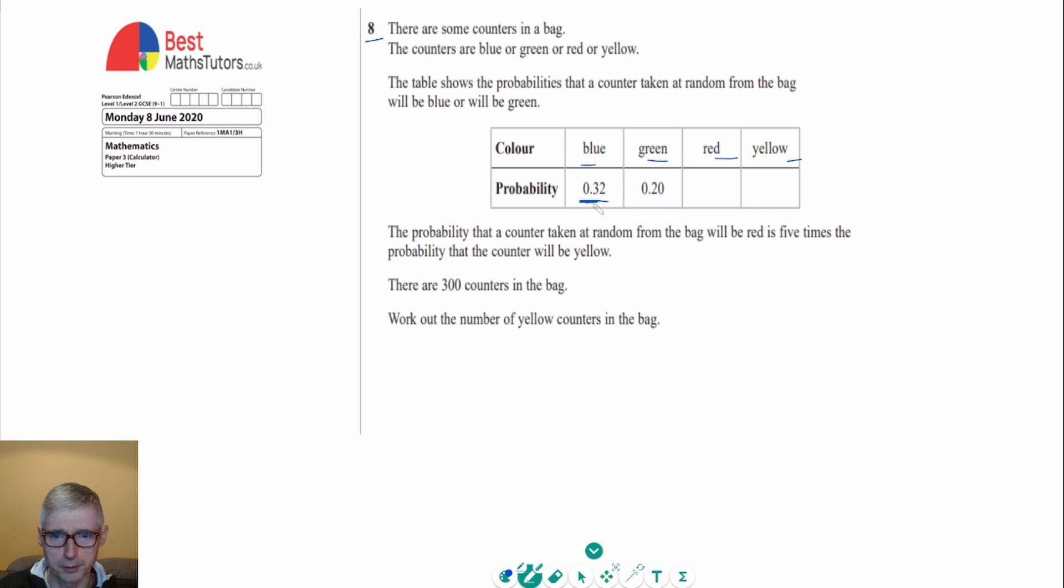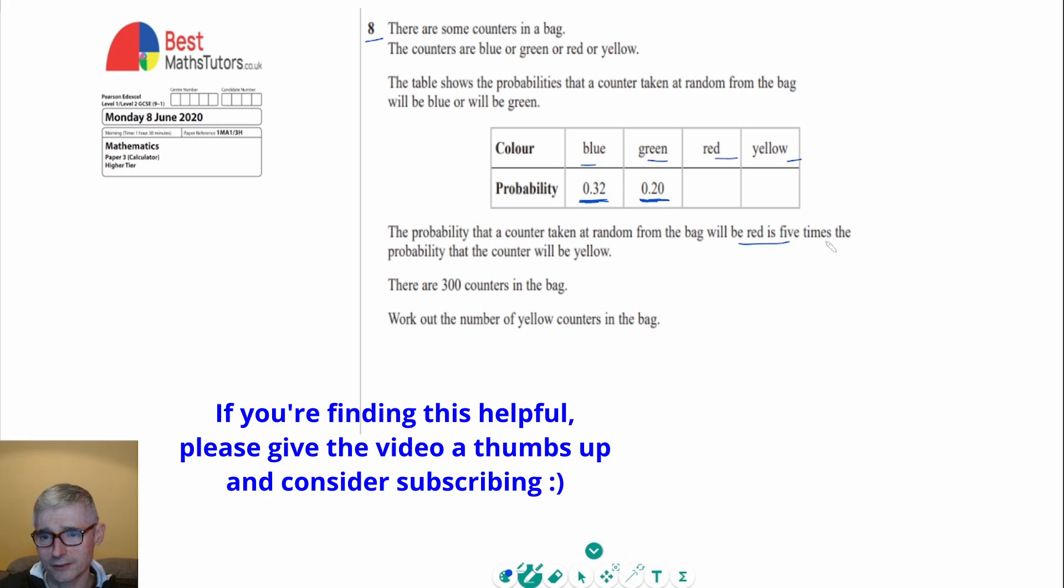And it says the probabilities are shown for taking a counter out of the bag at random. So for blue and for green, we've got 0.32 is probability for taking a blue one and probability for taking a green one is 0.2. Now we're told that the probability that a counter taken at random from the bag will be red is five times the probability that the counter will be yellow.